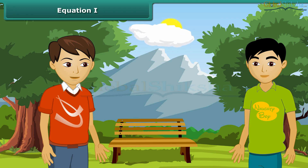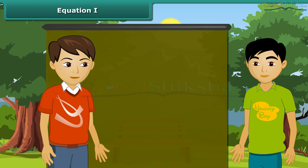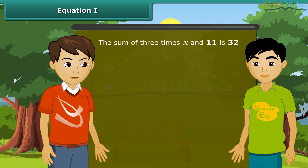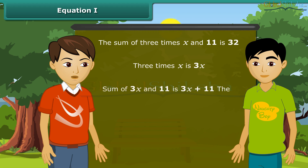Now I will tell you a statement. You have to change it into an equation. Are you ready? Yes. The sum of 3 times X and 11 is 32. 3 times X is 3X. Sum of 3X and 11 is 3X plus 11. The sum is 32. So the equation is 3X + 11 = 32.